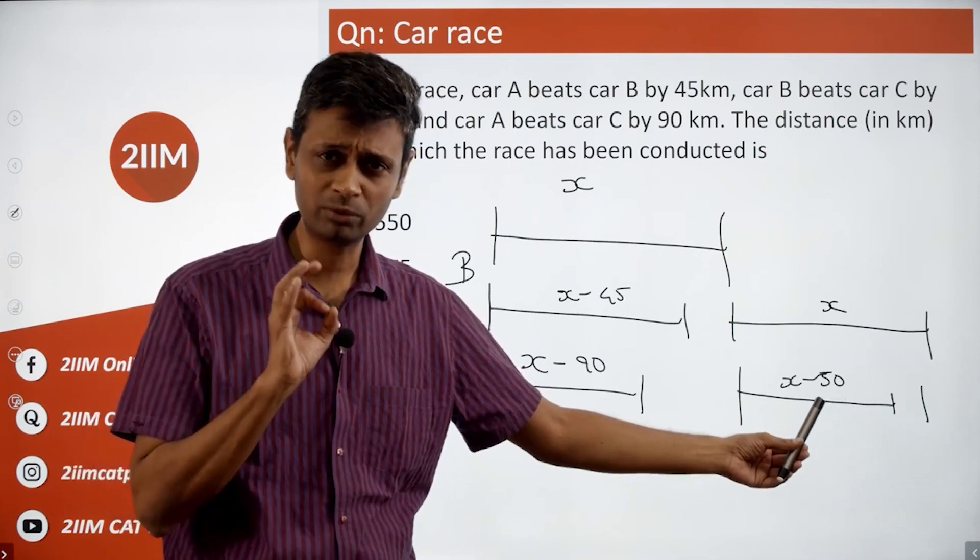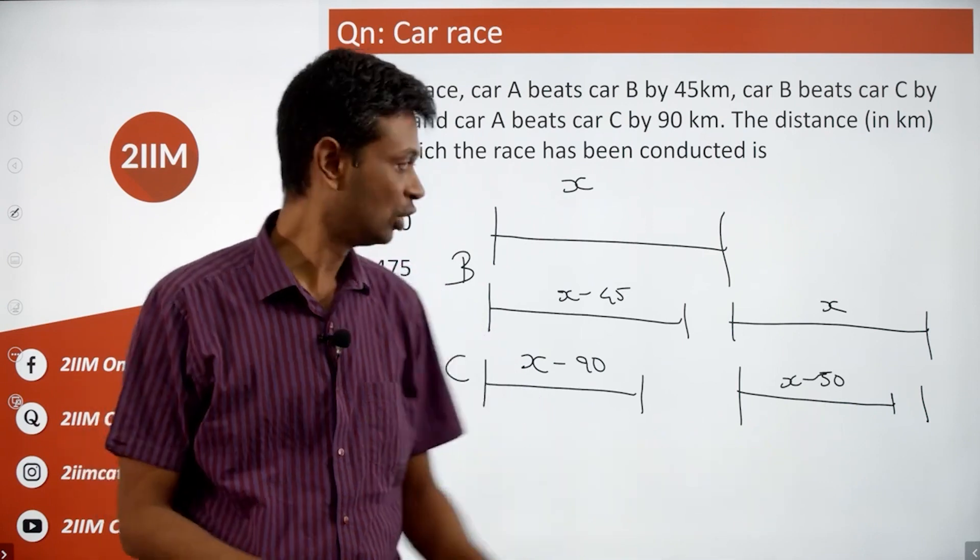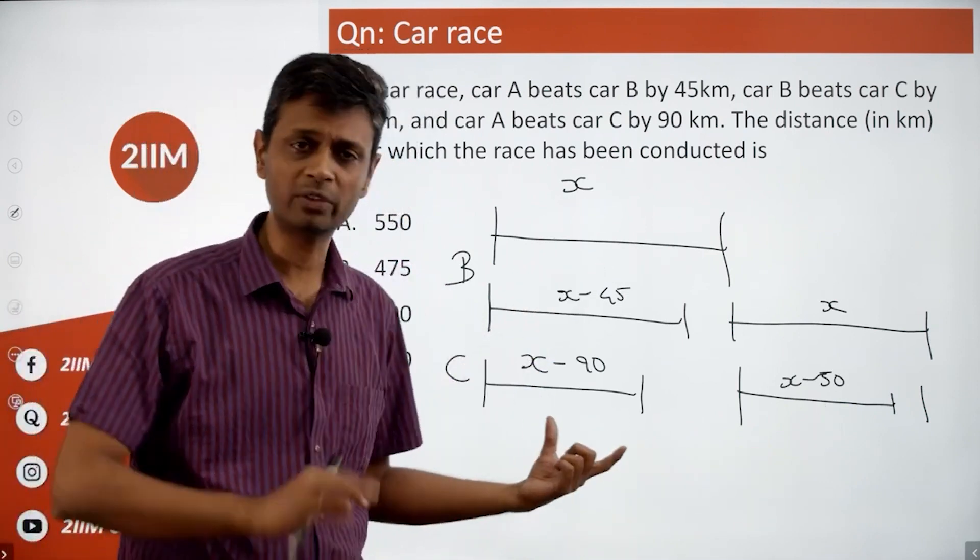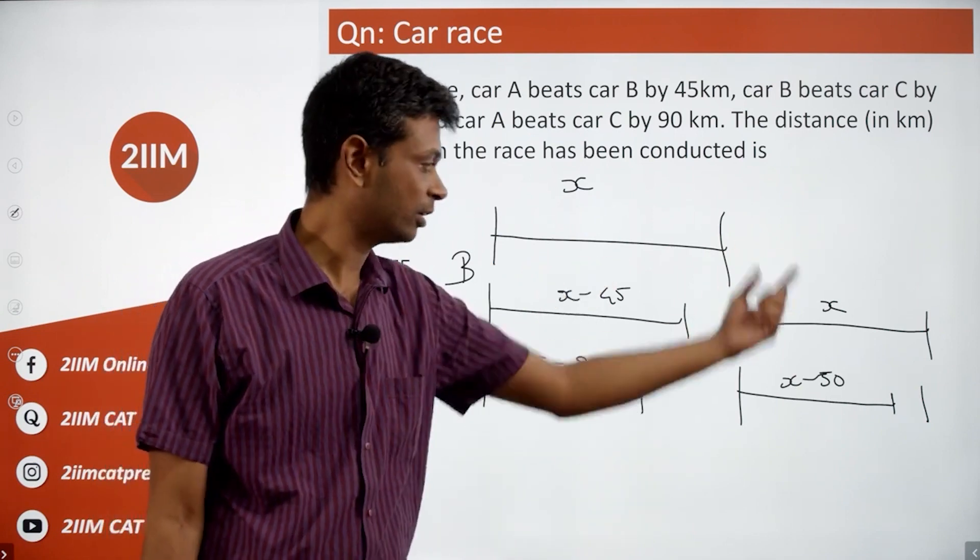Very simple, the only thing we need to think about is ratios. The ratio of distance covered between B to C is always the same. So X minus 45 by X minus 90 is X by X minus 50.